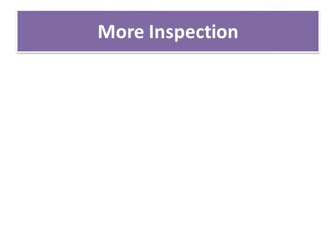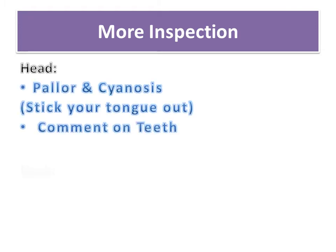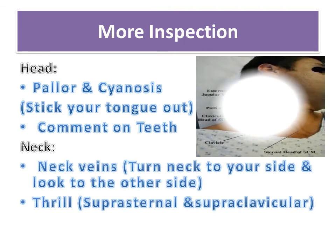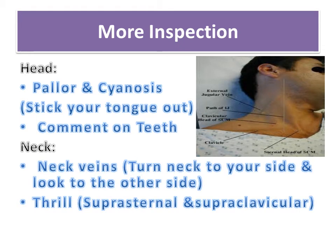Keep your attention to the child's face. Look at the eyes for scleral icterus or pallor. Look inside the mouth for signs of central cyanosis. Examine the mucous membranes to assess the volume status of the patient. Assessment of the jugular venous pressure is not routinely performed in pediatric patients under 8 years of age, and is applicable to older adolescent and young adult patients.